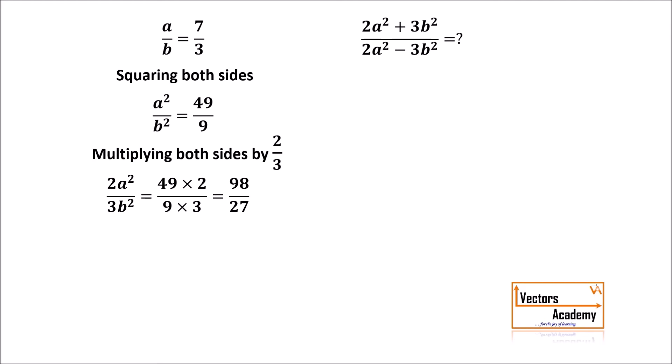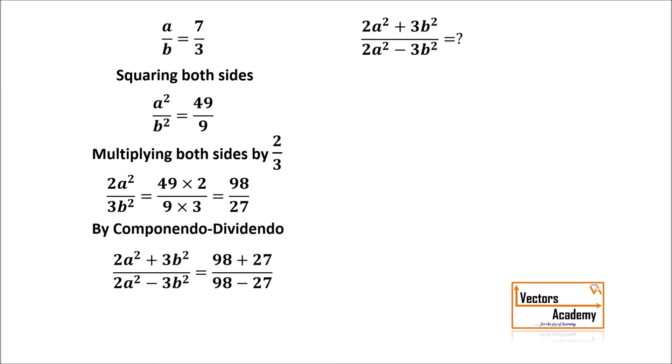Now we have the squares and coefficients. We need both plus and minus signs, which happens in Componendo Dividendo. Applying Componendo Dividendo on both sides and simplifying, the answer is 125 by 71.